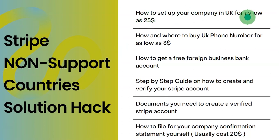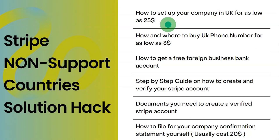This is why I'm going to introduce you to another service that lets you set up your UK company at a very cheaper rate. Through the non-supported country solution program, you can learn how to set up your UK company for as low as $25. You can imagine the difference between setting up a company for $200 versus $25 — you are going to be saving a lot of money, especially if you are on a budget.